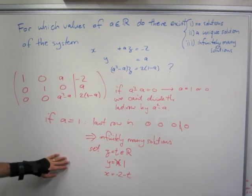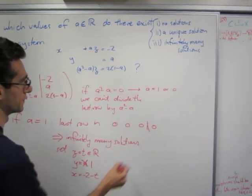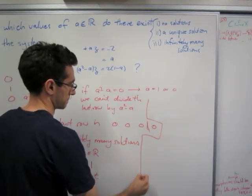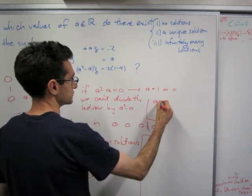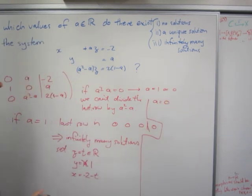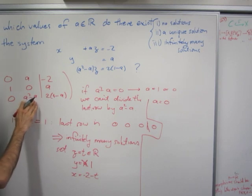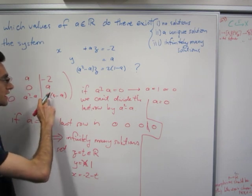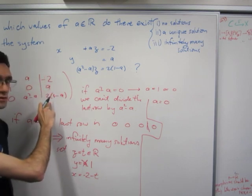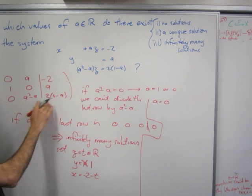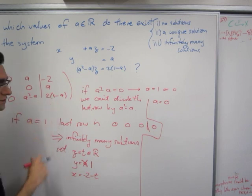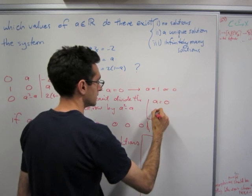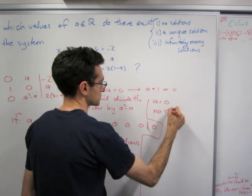Second case, a equals 0, then here is 0 on this side, we have 0, 0, 0. But on this side we don't have a 0. On this side we have, we have a 2. And so we're trying to solve essentially 0 equals 2, which we cannot do. So if a equals 0, there are no solutions.